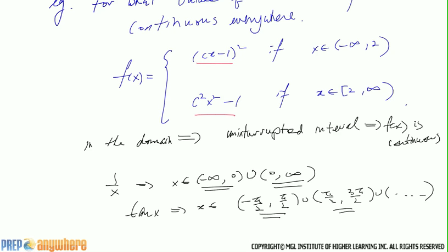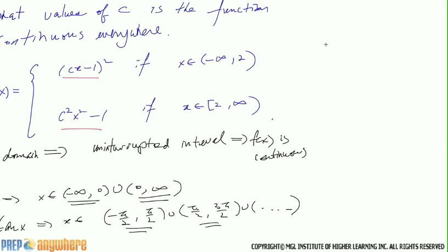So as long as the two, right? So if at x equals two, the left-hand limit is equal to the right-hand limit, and it's continuous everywhere.